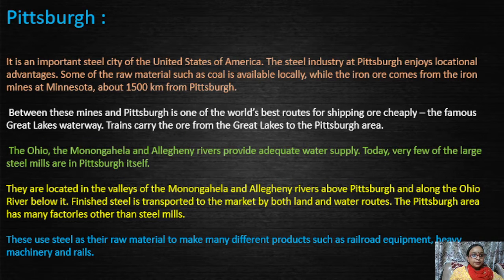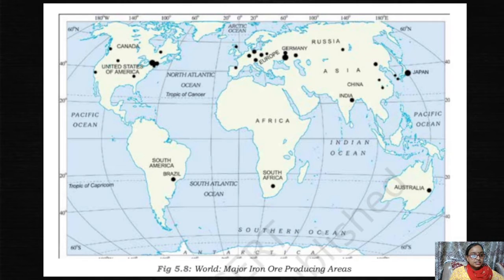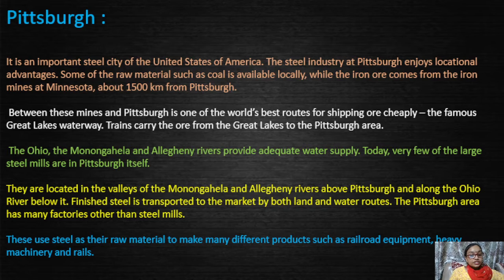Now let's talk about Pittsburgh. Pittsburgh is an iron and steel plant — a steel city — located in the USA, the United States of America. Looking at a diagram of the USA, Pittsburgh is on the left-hand side near Canada. The steel industry at Pittsburgh enjoys locational advantages.